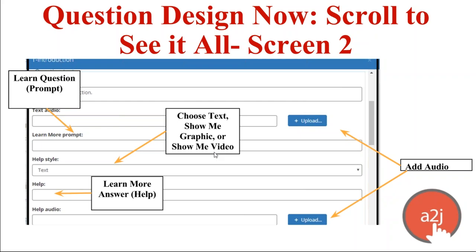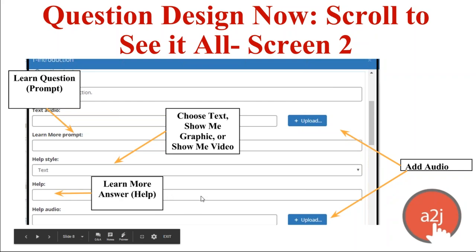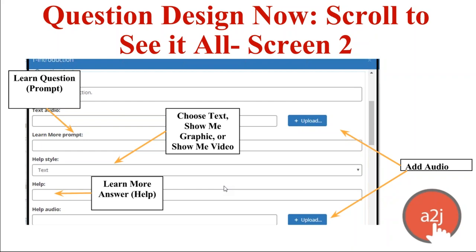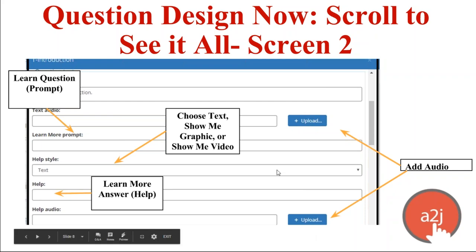Scrolling down further: the learn more help — the answer the guide avatar gives to the end user's question — can be either text, show me graphic, or show me video. If you choose graphic or video, you can also include a short text section displayed underneath. If you selected graphic or video, it pops up upload buttons that let you upload a PNG, GIF, JPEG, or MP4 file. You can also add audio to the help section just as you can to the text.